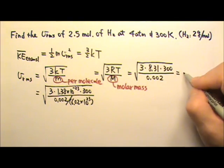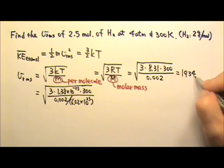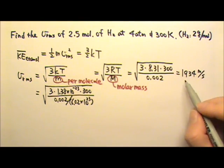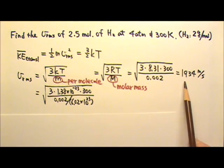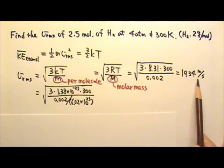And this will give me 1934 meters per second. The root-mean-square speed of hydrogen molecules at 300 Kelvin is 1934 meters per second. Very fast.